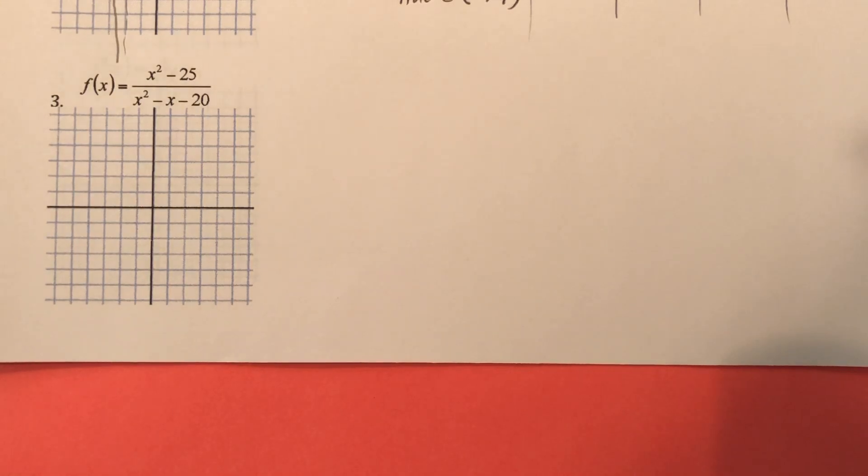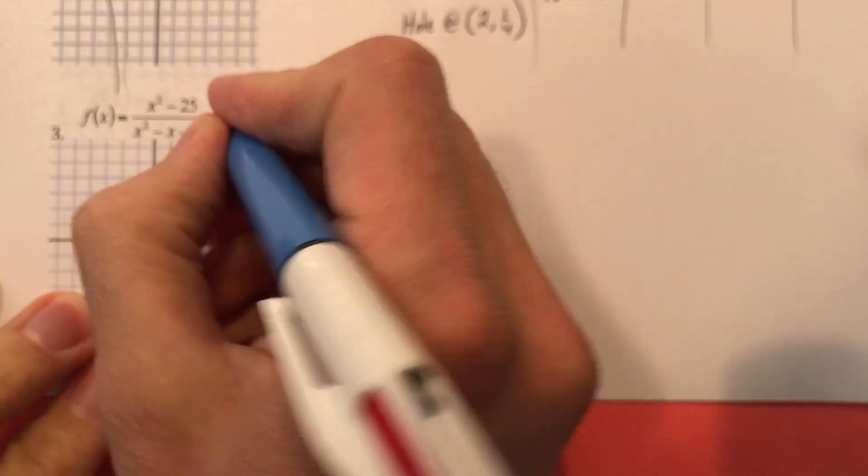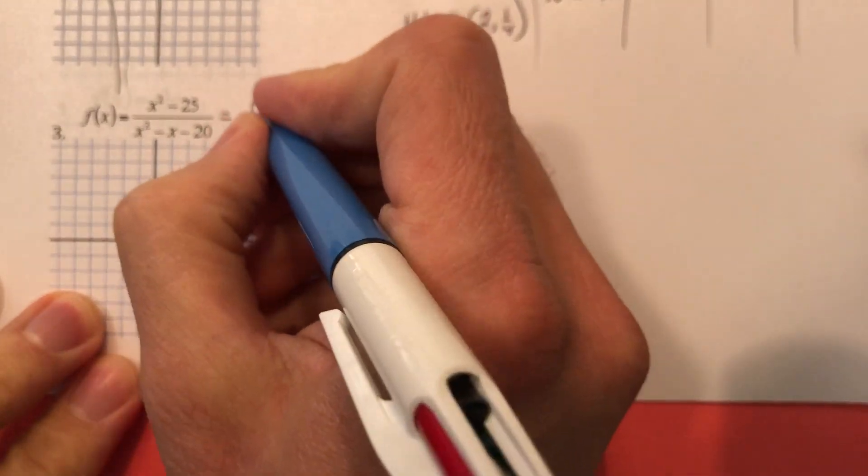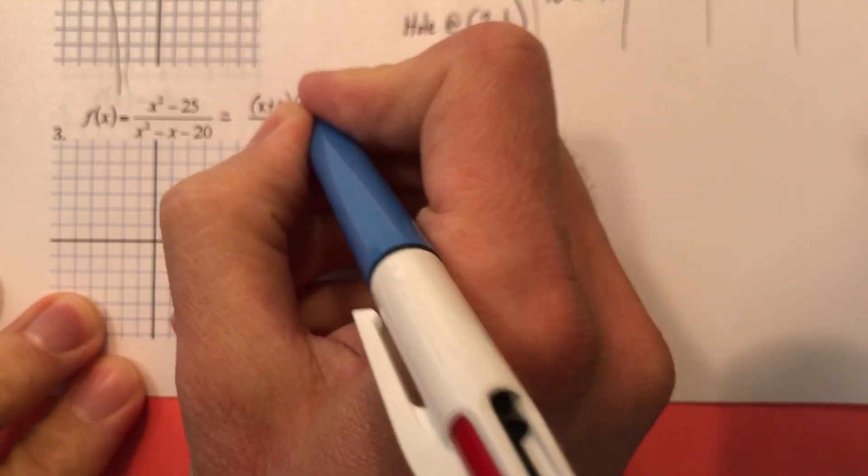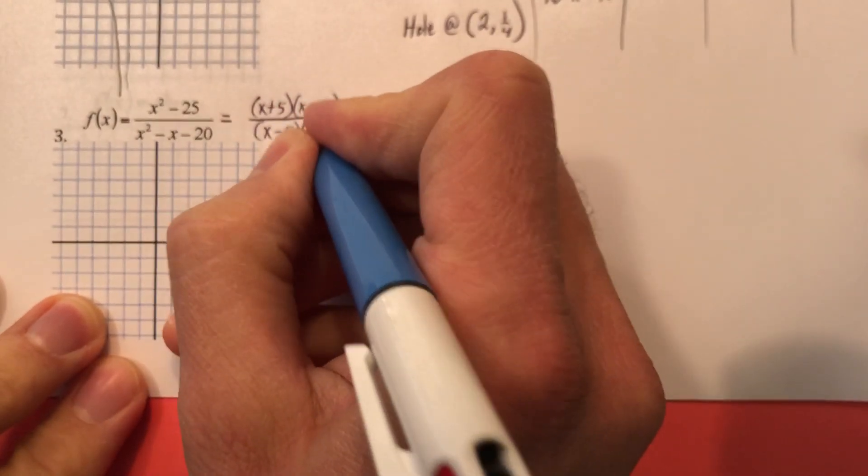Let's start the third problem like we should start all of the problems. Let's start by factoring if possible, and this one actually does factor. Lucky us. X plus 5, X minus 5 in the numerator. Denominator is X minus 5, X plus 4.